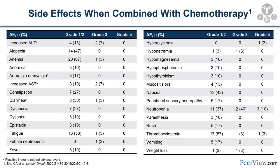When combining neoadjuvant immunotherapy with chemotherapy — the Columbia study of atezolizumab with nab-paclitaxel and carboplatin, published in Lancet Oncology — the side effects weren't that different from LCMC3. Grade 3 adverse events were actually even lower, with neutropenia the standout given the chemotherapy regimen. These drugs are well tolerated, and as oncologists have learned to give chemotherapy well, we're getting a lot of patients through to surgery with minimal side effects from induction therapy.